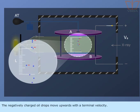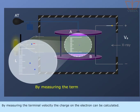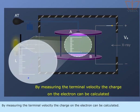The negatively charged oil drops move upwards with a terminal velocity. By measuring the terminal velocity the charge on the electron can be calculated.